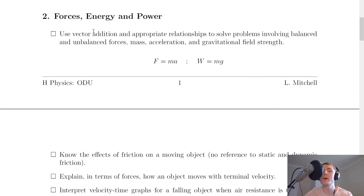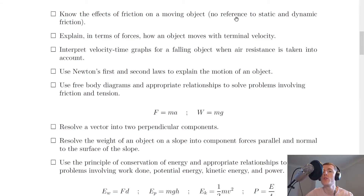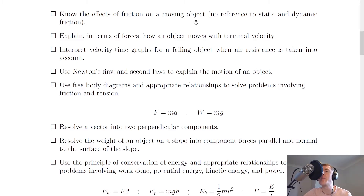Moving on to section two: forces, energy and power. You need to use vector addition and appropriate relationships to solve problems involving balanced and unbalanced forces, mass, acceleration and gravitational field strength. The key equations are F equals ma and W equals mg. The important part here is vector addition — remember if you have two force vectors, you add them nose to tail to get the resultant. You also need to know the effects of friction on a moving object: friction causes an object to slow down and usually generates heat, including specific types like air resistance, also known as drag.